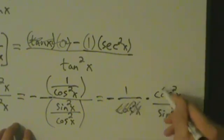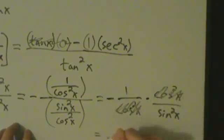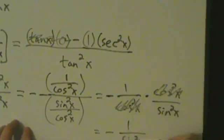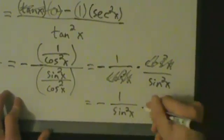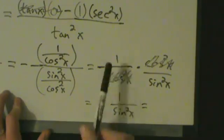All right. So these cosine squareds cancel. That's great. Now what we're left with is negative 1 over sine squared of x. Oops. So we just have the 1 and the sine squared.